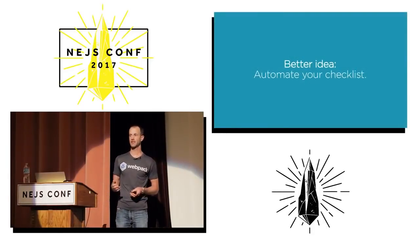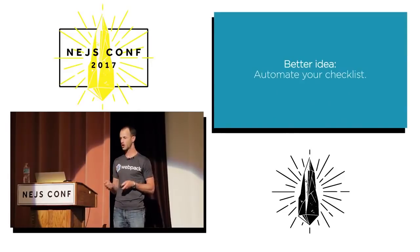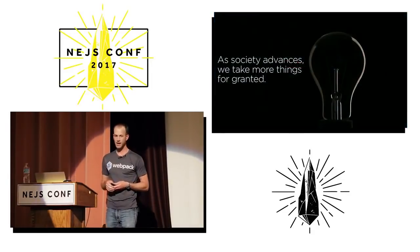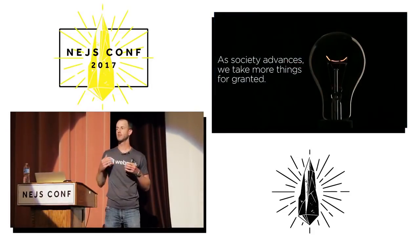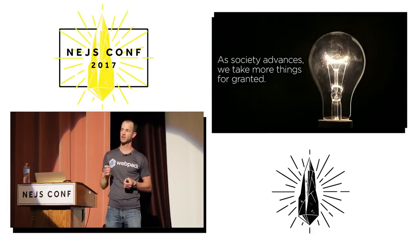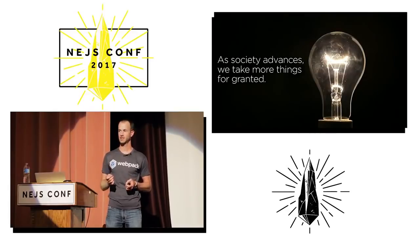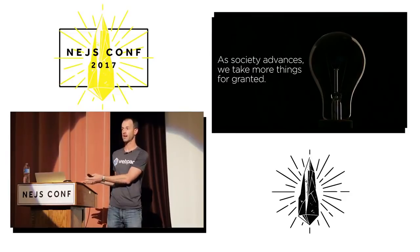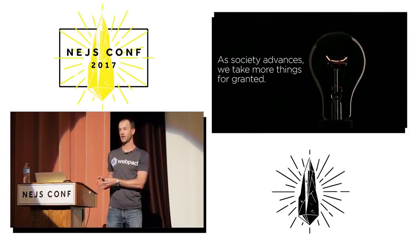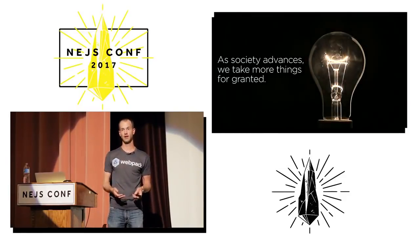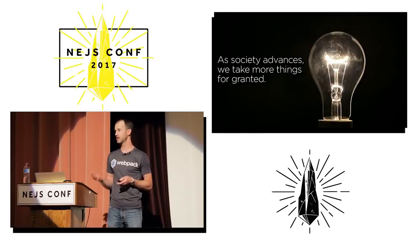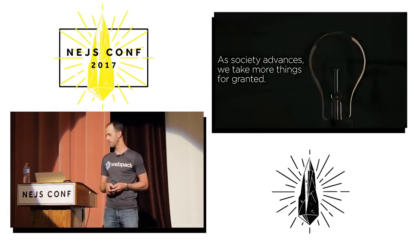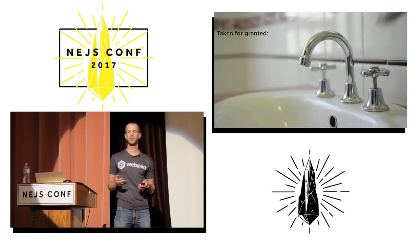Strive to automate. I think this is a really important principle — the more things you can take for granted, the better off you are. Society advances as we can take things for granted. The fact that we came here today and could take for granted that the lights would be on, that my computer would be charged, that I could get in a car and drive here — that's really important. As developers, we need to increase the list of things we can take for granted.